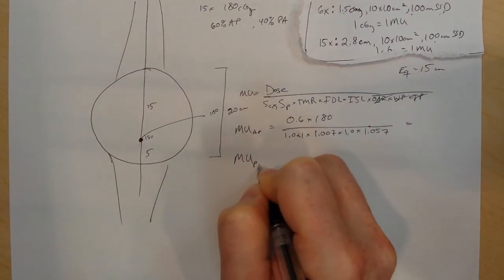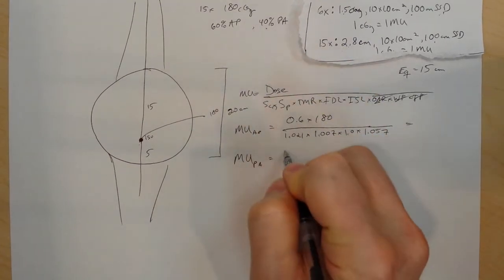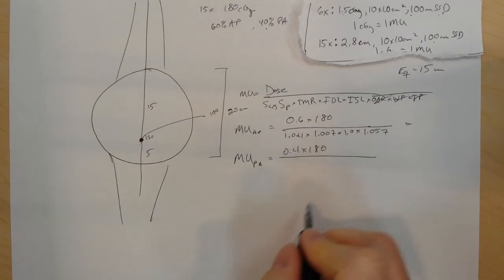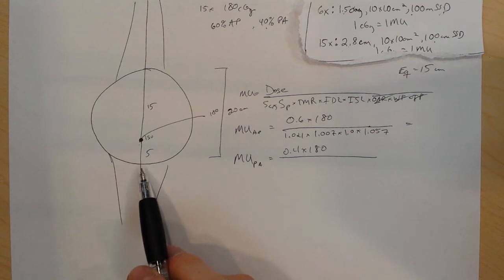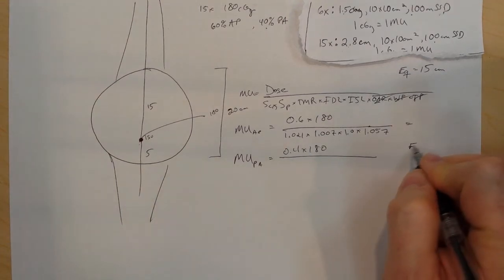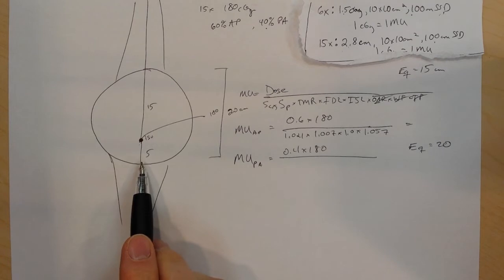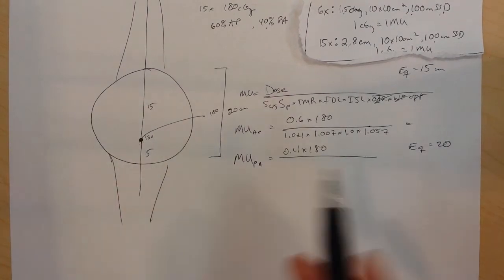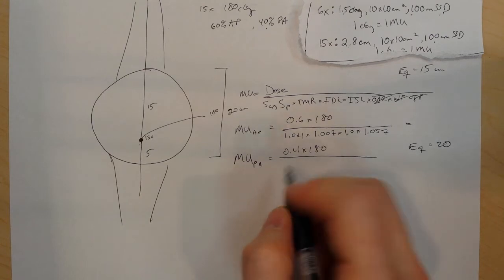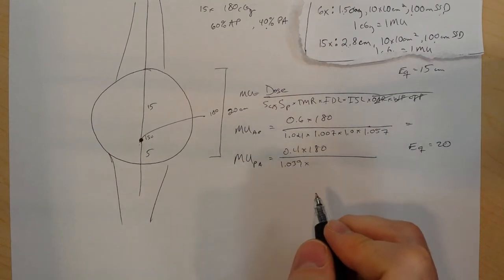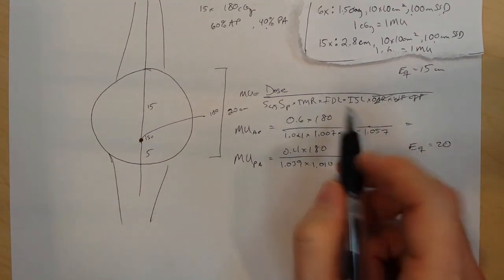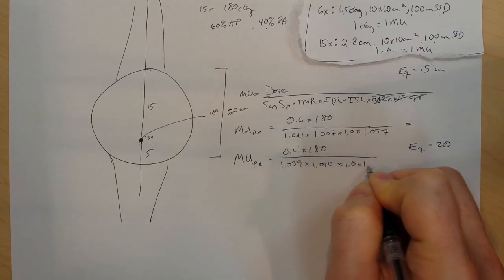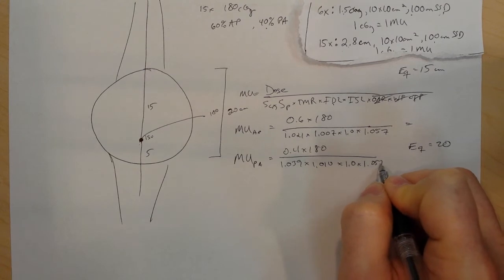My monitor unit for the PA is going to be - I'm 40% from the PA, so I'm 0.4 times 180. This time, my equivalent square, I'm going to put at 20. Since I'm closer to the target, closer to my tumor, my jaws are going to have to be bigger most likely, so I'm 1.039 for my collimator scatter factor, 1.010 for my phantom scatter factor. My isodose line is 1.0, and I'm 1.057 again for my inverse square.